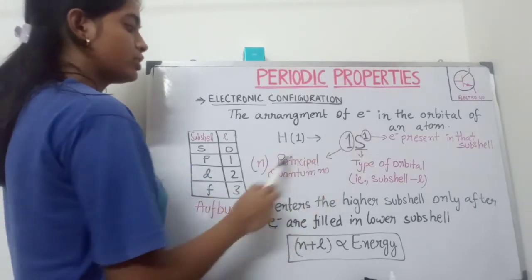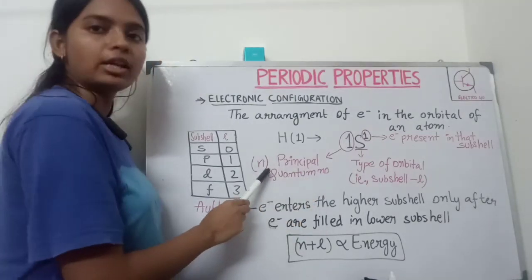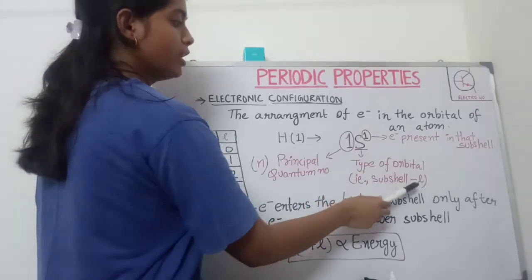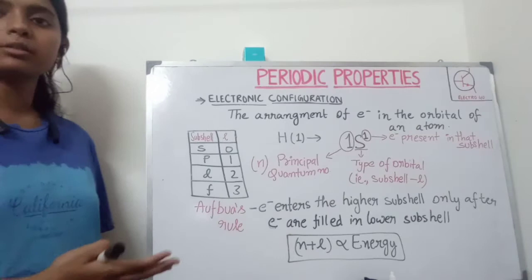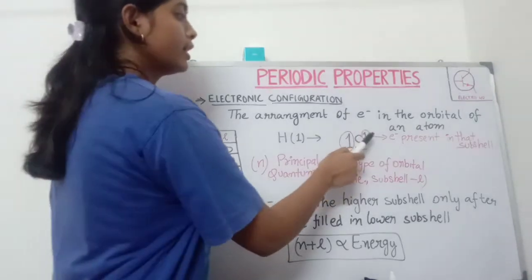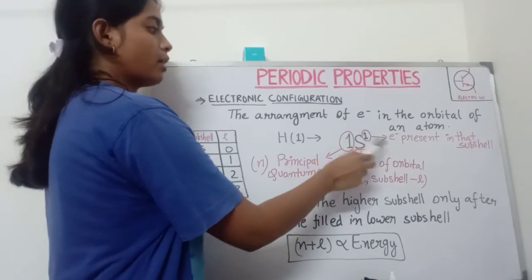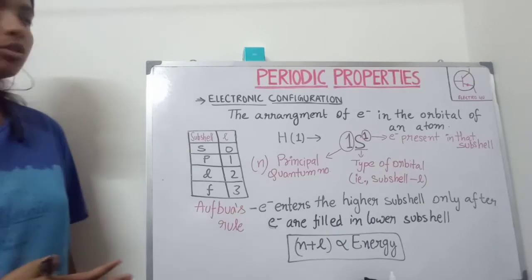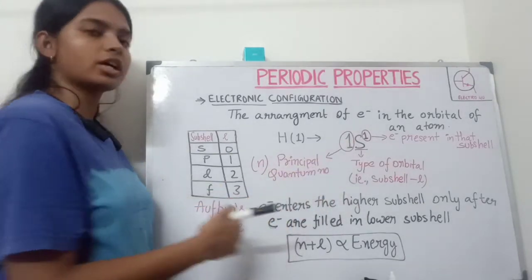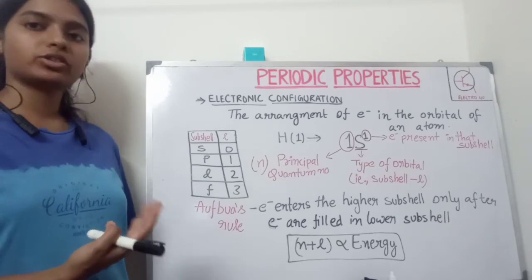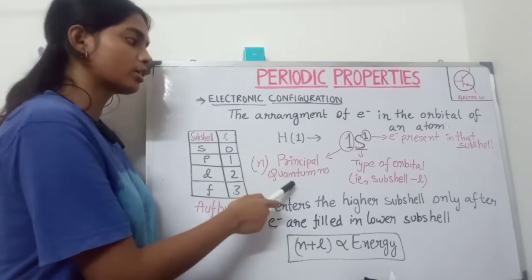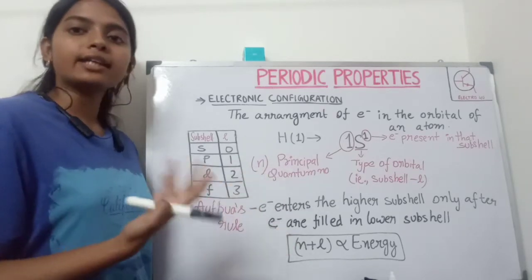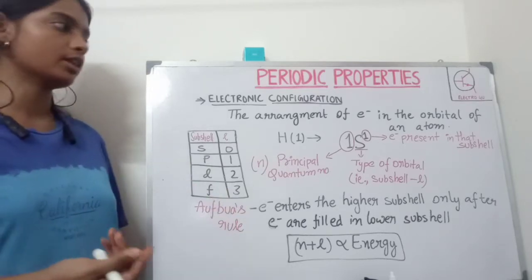The 1 in the coefficient represents the principal quantum number, that is the value of n. The s represents the type of orbital, that is the subshell, or the value of the azimuthal quantum number l. The 1 at the power represents the number of electrons present in that subshell. So these are the three things required to determine the electronic configuration of an atom: the principal quantum number, the type of orbital or subshell, and the number of electrons present in that subshell.